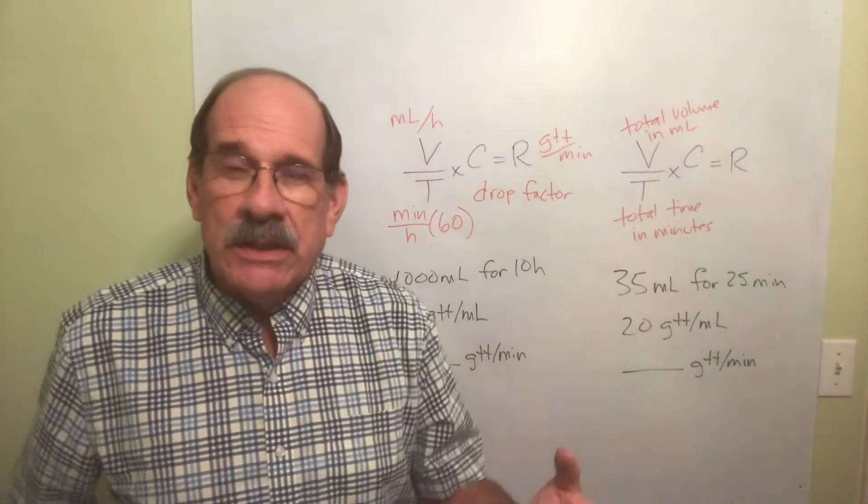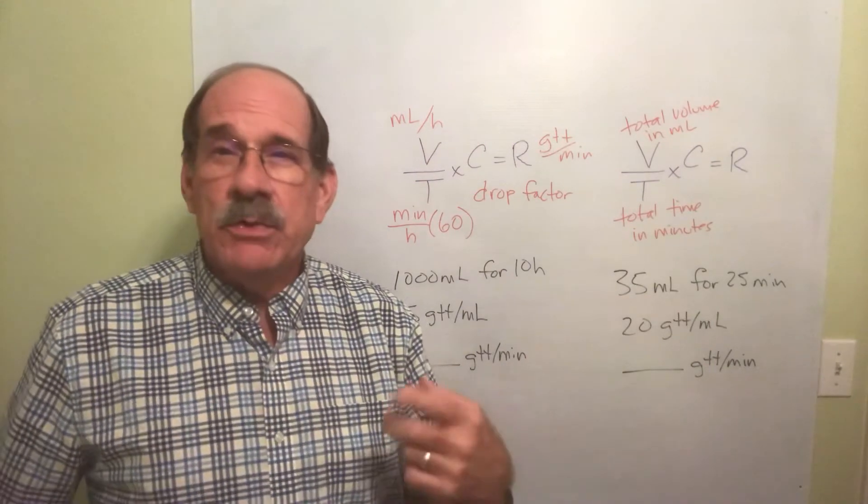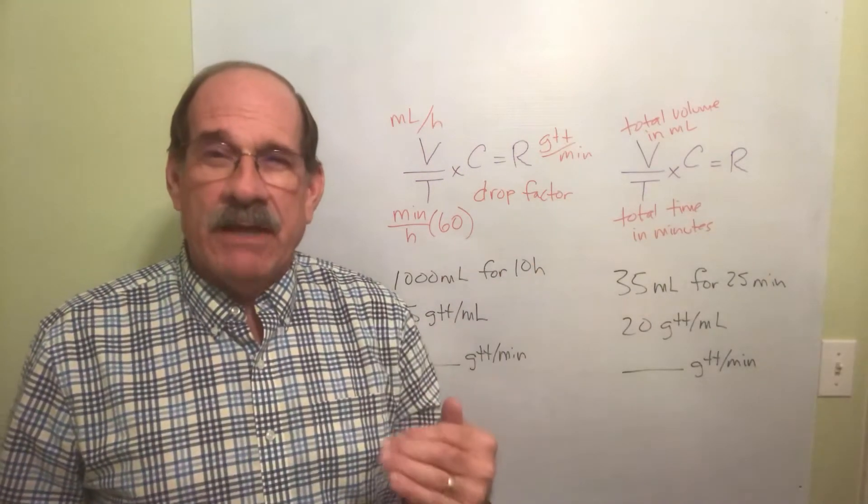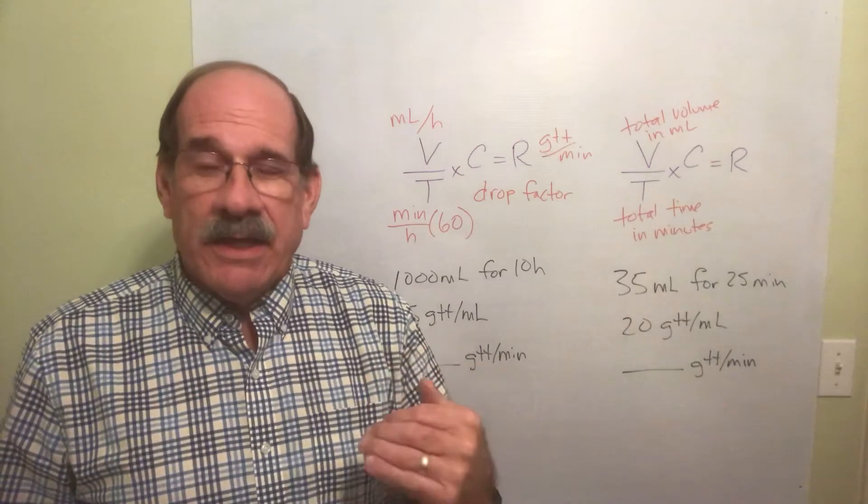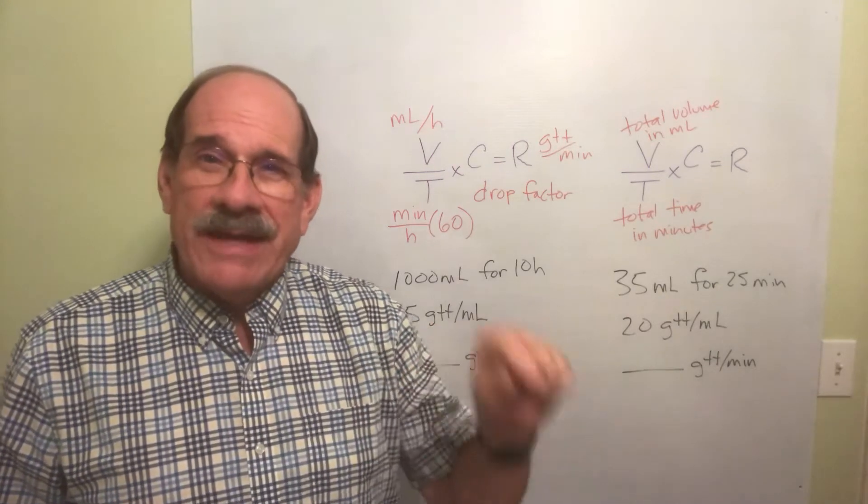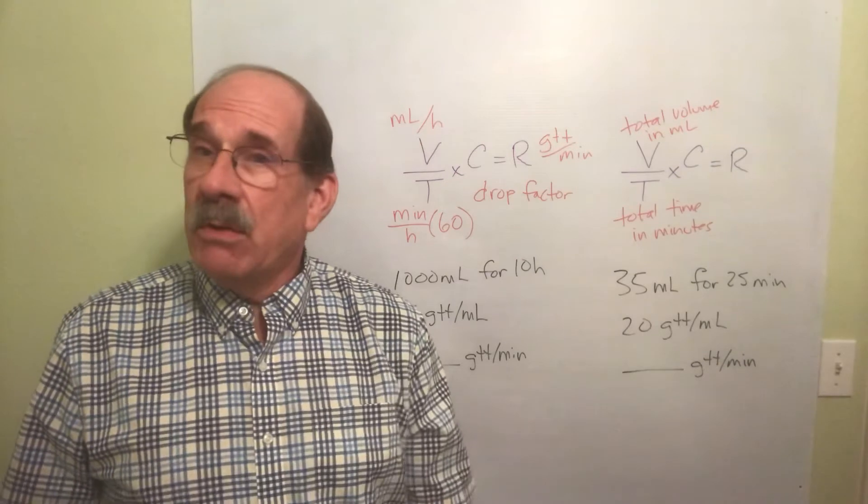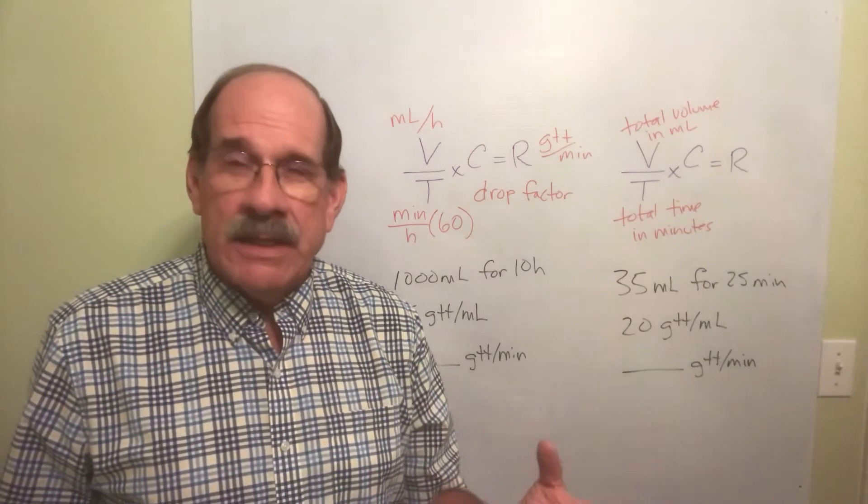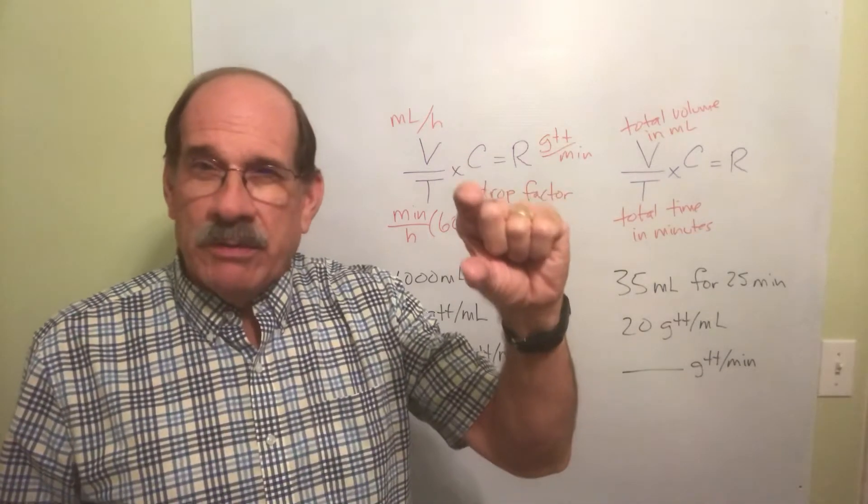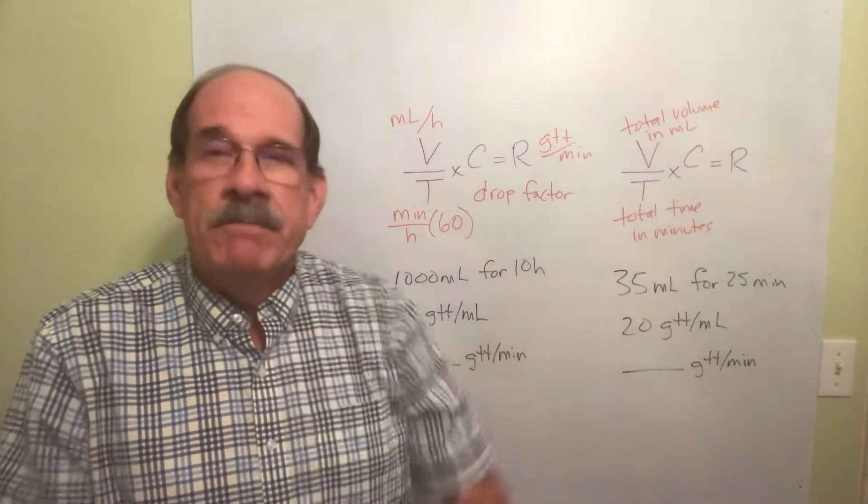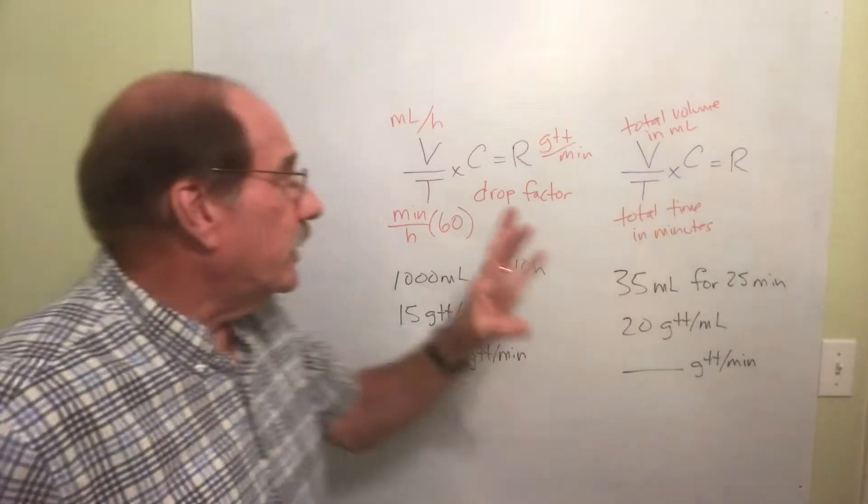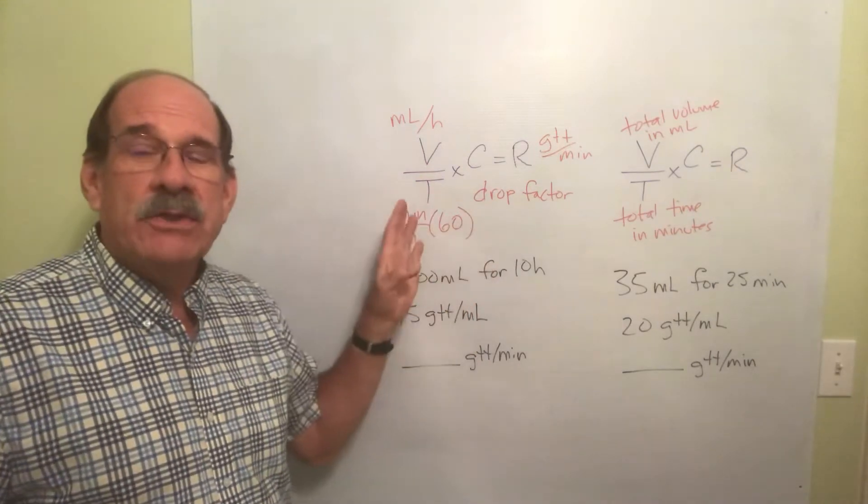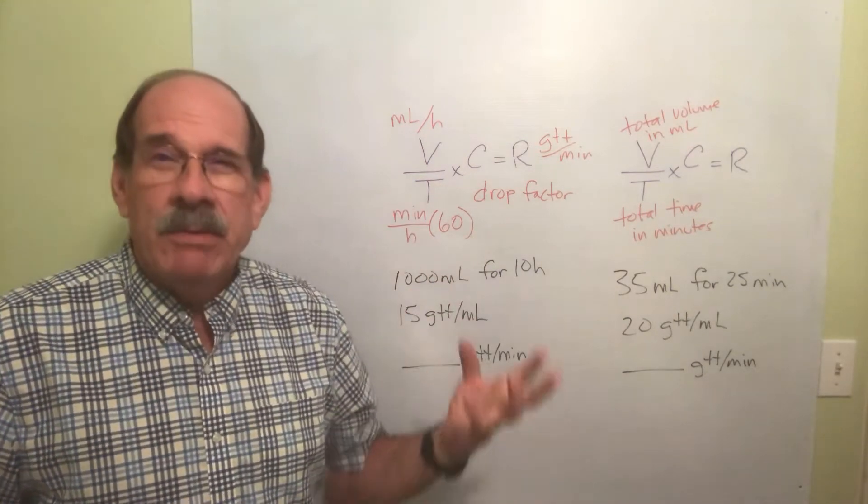If you have a machine like an infusion controller, infusion pump, a syringe pump, any electronic device with which you're giving an IV, you have to calculate the milliliters per hour and program that into the machine. If you don't have a machine, you have to somehow calculate the drops per minute and count drops per minute. Watch the little drip chamber and get your watch: one, two, three. The way I taught this was with this formula, which has been around since before they invented calculators because it's fairly simple math.